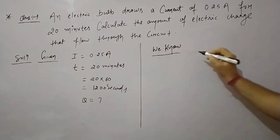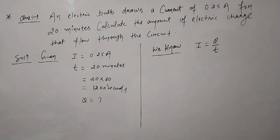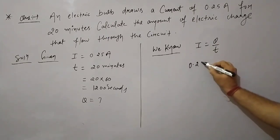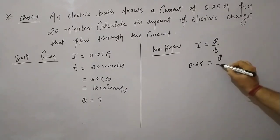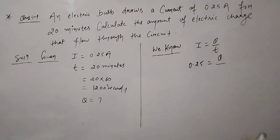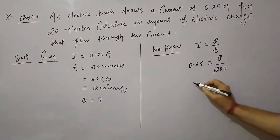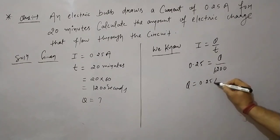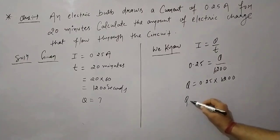Conductor examples: silver, copper, aluminum. Insulator examples: rubber, paper, dry wood. We talked about free electrons in the conductor — when free electrons move, there will be current flow. If there is current flow at any particular point, then there will be electron flow.